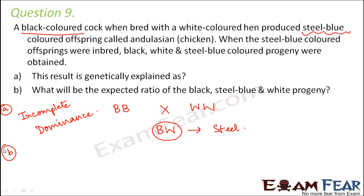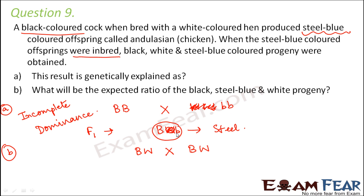The second part asks: what will be the expected ratio of black, steel blue, and white progeny when the F1 steel blue offspring are inbred? The steel blue F1 offspring (Bb) were inbred — steel blue crossed with steel blue. The possible gametes from each parent are B and b. The possible combinations from this cross are: BB, Bb, Bb, and bb.